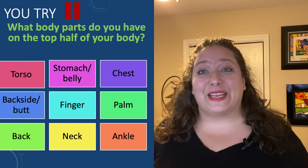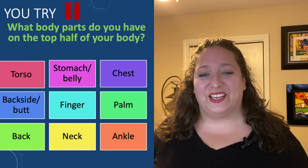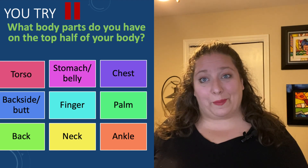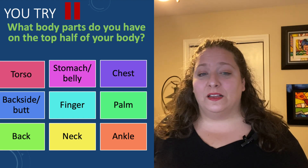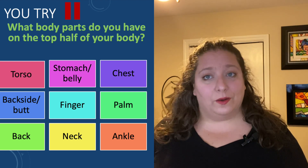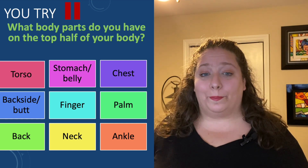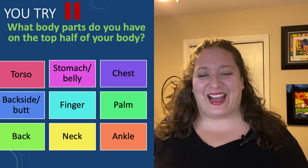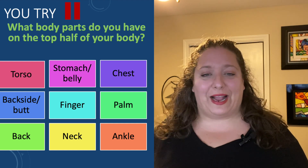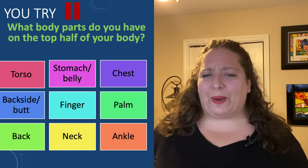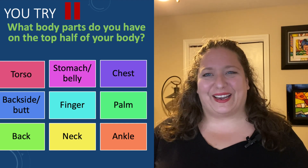Here are some key words to help you practice with this question: torso, stomach, belly, chest, backside or butt, finger, palm, back, neck, ankle. Pause and practice: what body parts do you have on the top half of your body?